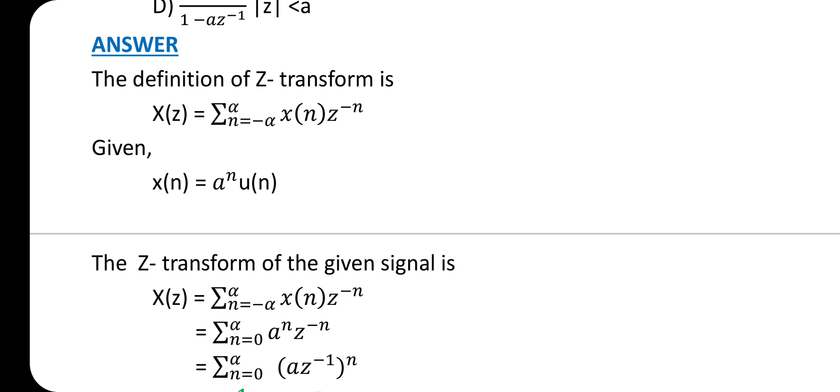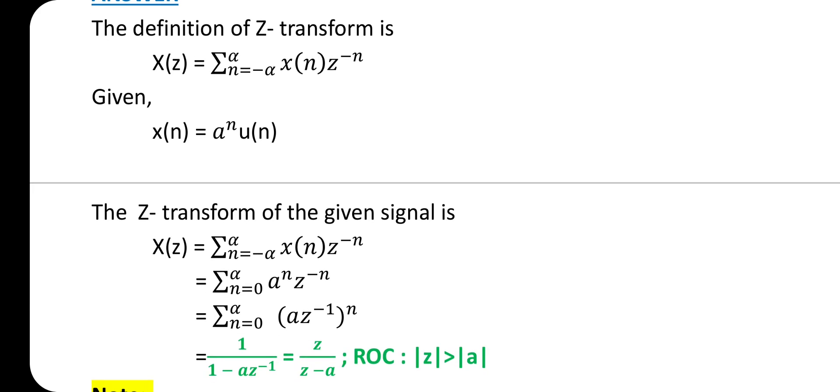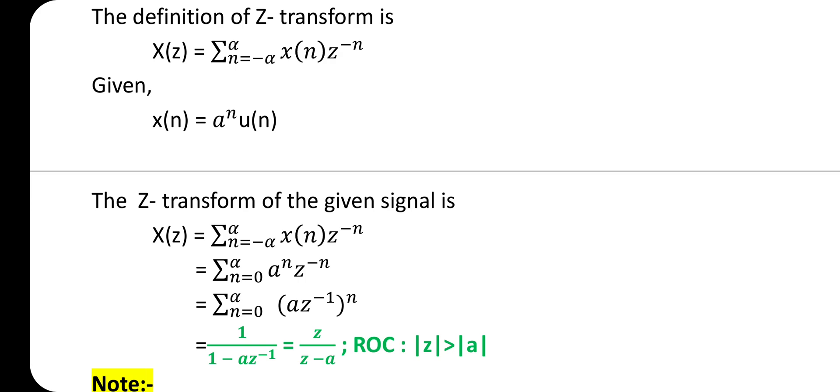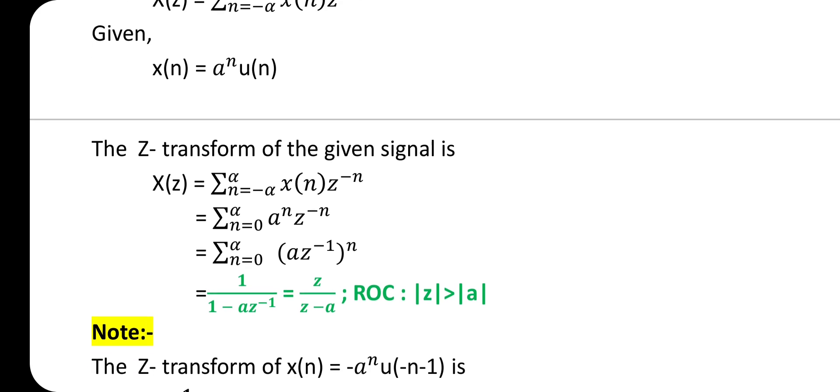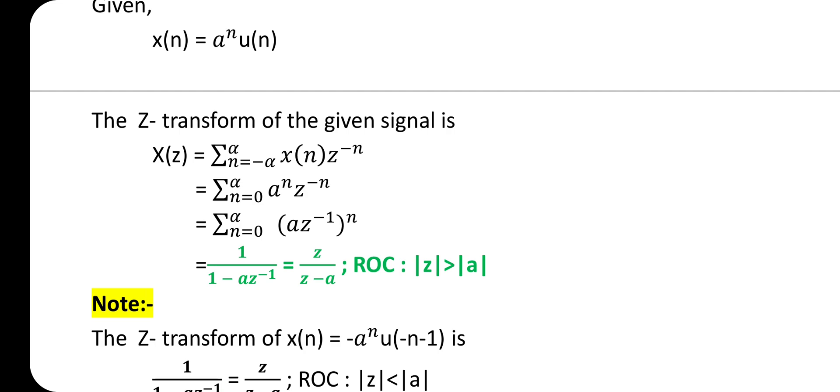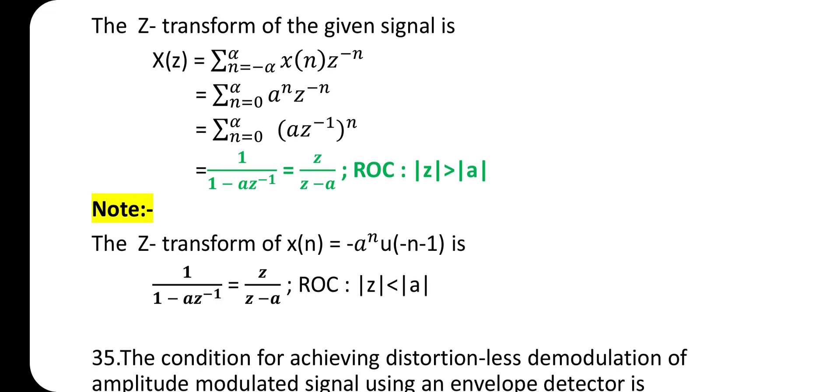The definition of z-transform is x(z) = Σ(n = -∞ to ∞) x(n)z^(-n). Given x(n) = a^n u(n), the z-transform is x(z) = Σ(n = -∞ to ∞) x(n)z^(-n). Substituting x(n) and noting the unit step function, the limit changes from 0 to infinity: Σ(n = 0 to ∞) a^n z^(-n). Taking n outside: Σ(n = 0 to ∞) (az^(-1))^n. After solving, we get 1/(1 - az^(-1)) = z/(z - a).